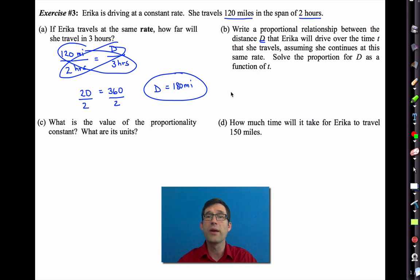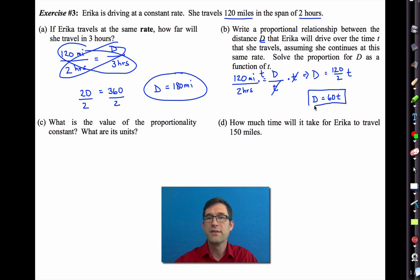Letter B says, write a proportional relationship between the distance D that Erica will drive over the time T that she travels, assuming she continues at the same rate. We have 120 miles divided by two hours equals D miles divided by T hours. I'm going to multiply both sides of this equation by T to solve for D. What I'm going to find is that D is 120 divided by two times T. But it would be better if I do 120 divided by two and I just get this. The distance she travels is always 60 times T.